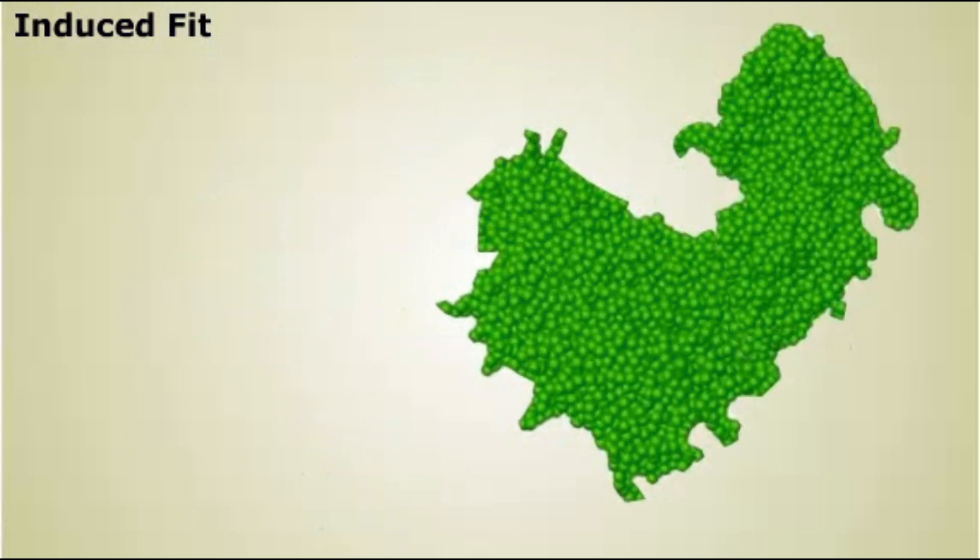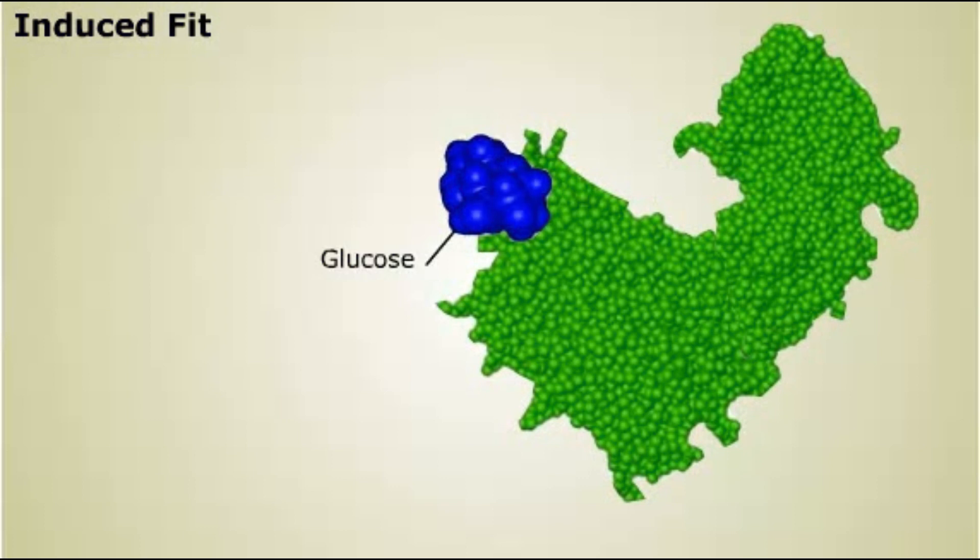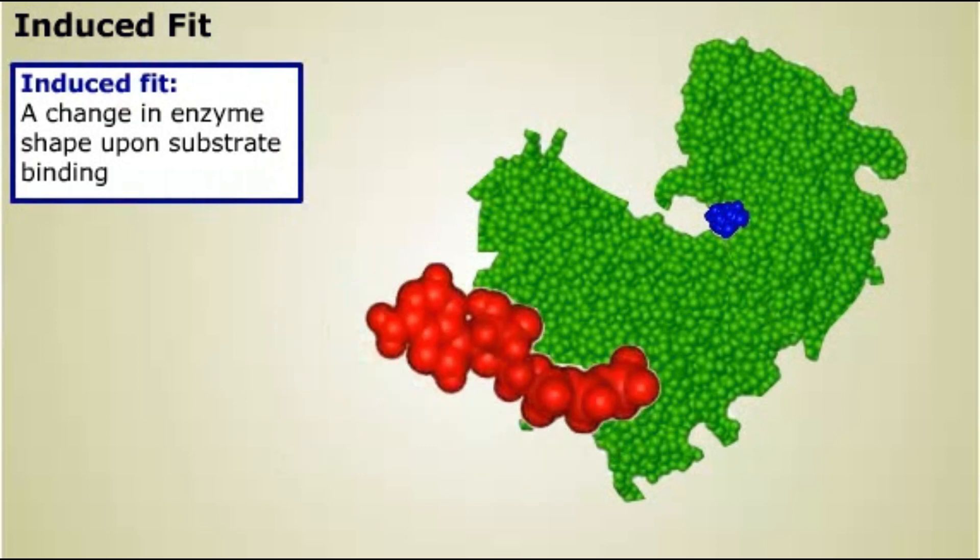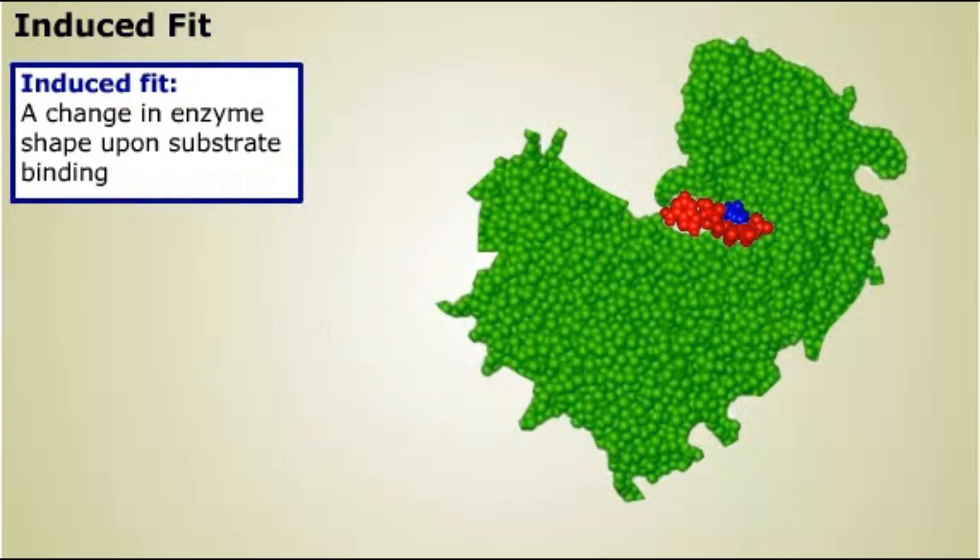Hexokinase binds ATP only after glucose binds. This prevents the enzyme from catalyzing the reaction of ATP with water. The enzyme changes its shape after glucose binds. This is called induced fit. The shape change promotes ATP binding, thereby improving the enzymatic activity.